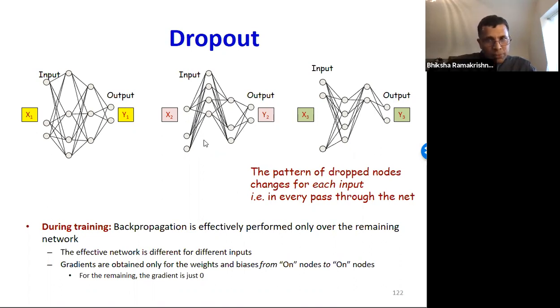For each input, we only compute the derivatives for the weights of edges that connect to neurons that have not been switched off, so the parameters of the connections that actually remain. The gradients for the remaining terms are set to zero. We will update the parameters with the gradients computed in this manner on these reduced networks.